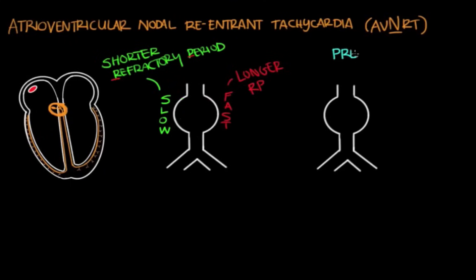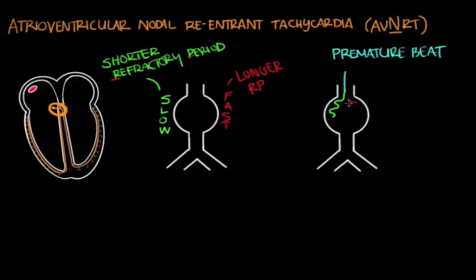Now suppose an early or premature beat arrives at a time when the fast pathway is still in its refractory period but the slow pathway has already recovered and is open. That beat sends an impulse down the slow pathway. As it slowly travels down, the fast pathway recovers from its refractory period. By the time the impulse reaches the final common pathway, it sends signal downward, and because the fast pathway has recovered, the impulse can activate the fast pathway and send signal back up. If the slow pathway has also recovered, it can activate the slow pathway again and send signal back down.